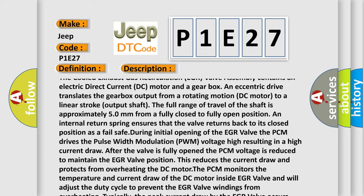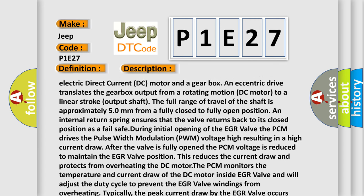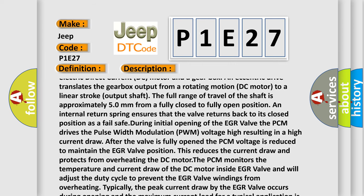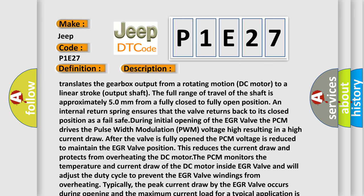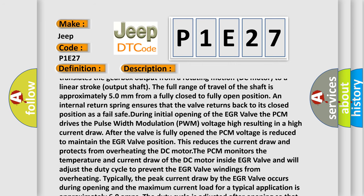An internal return spring ensures that the valve returns back to its closed position as a fail safe. During initial opening of the EGR valve, the PCM drives the pulse width modulation PWM voltage high resulting in a high current draw.